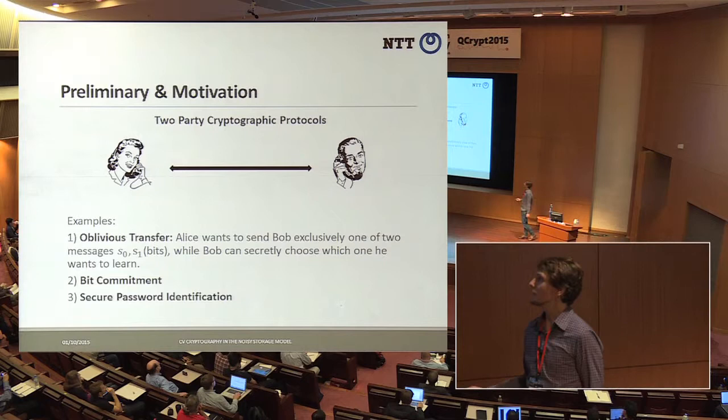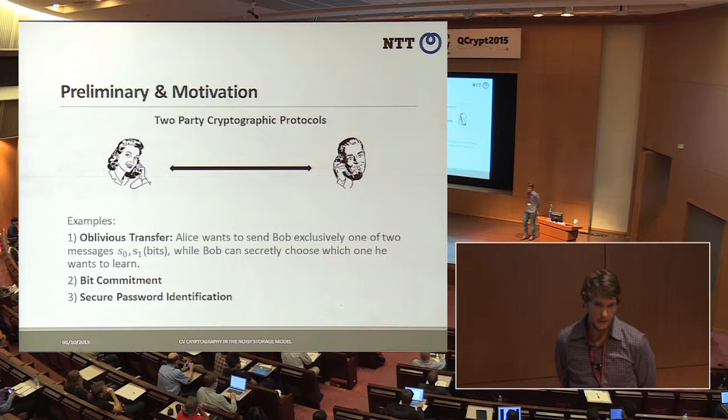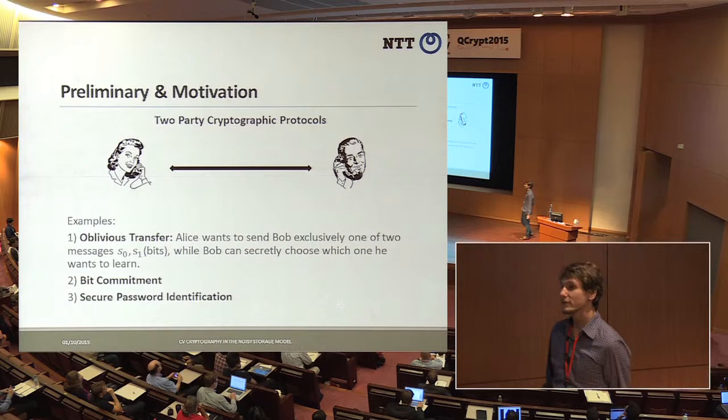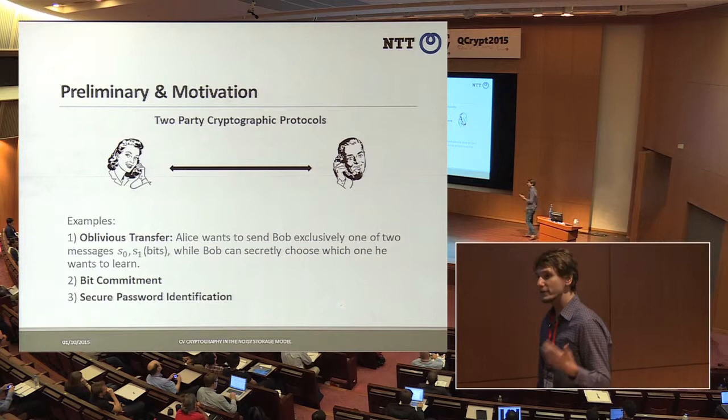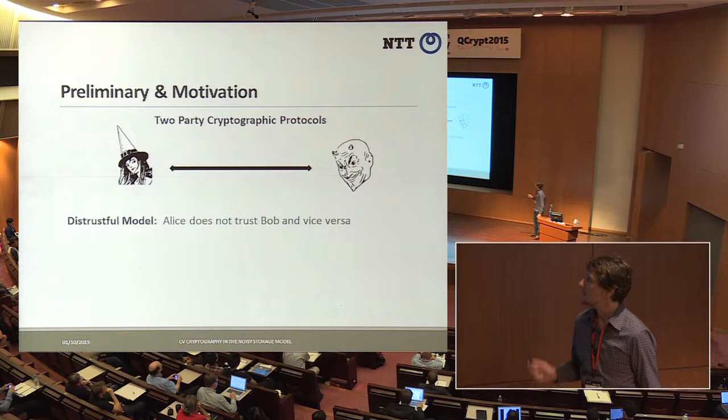What I'm going to talk about is two-party cryptographic protocols. Examples are oblivious transfer, bit commitment, or secure identification. I'm mostly concerned with oblivious transfer, in which Alice wants to send to Bob exclusively one of two messages, and Bob can secretly choose which one he wants to learn.